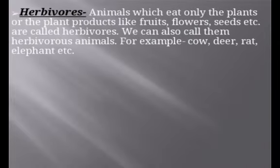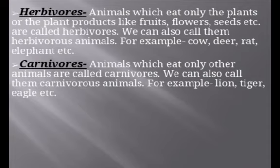Herbivores are animals which eat only plants or plant products like fruits, flowers, and seeds. For example, cow, deer, rat, and elephant. Carnivores are animals which eat only other animals — that is, flesh-eating animals. For example, lion, tiger, and eagle.